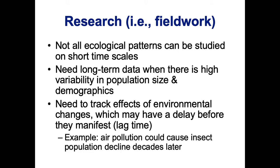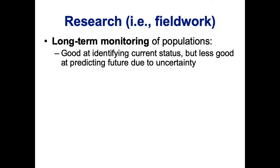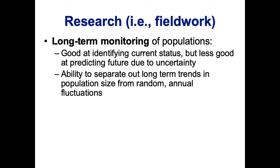An example is air pollution causing an insect population to decline decades later. Long-term monitoring is really important. It's good for identifying current status, but not as good at predicting the future due to uncertainty — if we don't know what weather or habitat characteristics will be in the future, it's very difficult to predict outcomes. It can also be difficult to separate out long-term trends in population size from annual fluctuations, particularly in highly variable populations.